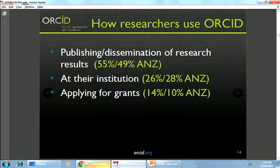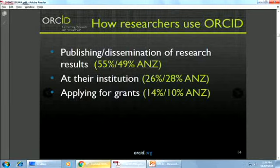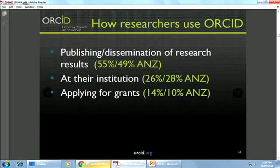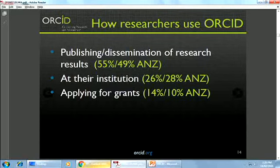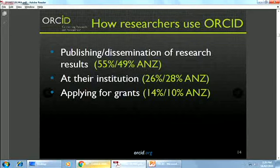These are the main current use cases for how researchers are using ORCID. Publishing is the main one — partly because publishers led the way in integrating with ORCID. There's slightly less use in this region than globally according to the survey, but still about 50% of researchers here have used their ORCID ID in a publishing situation. About 28% have used it within their institution — such as in a faculty profile system — and lower again for applying for grants, though with funder mandates that number is likely to increase.